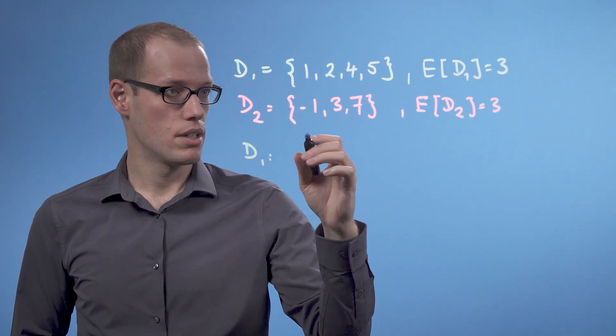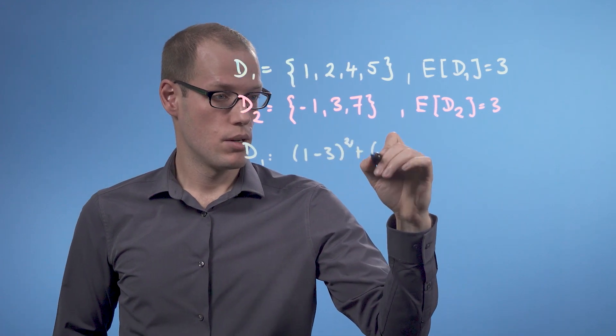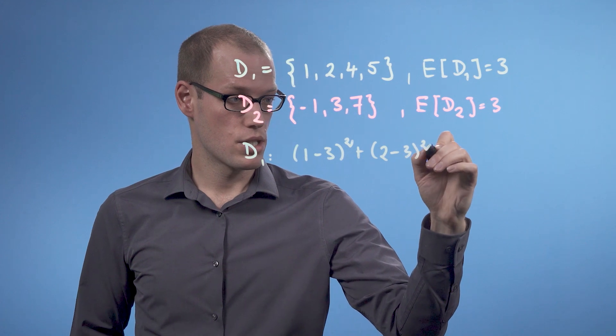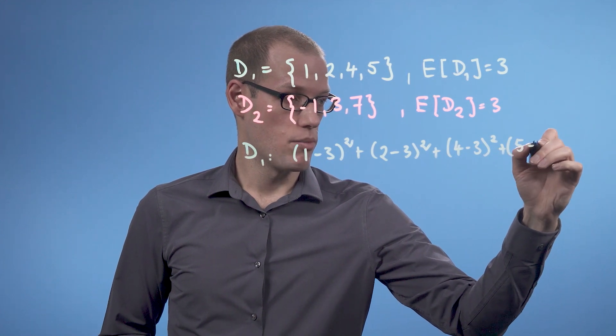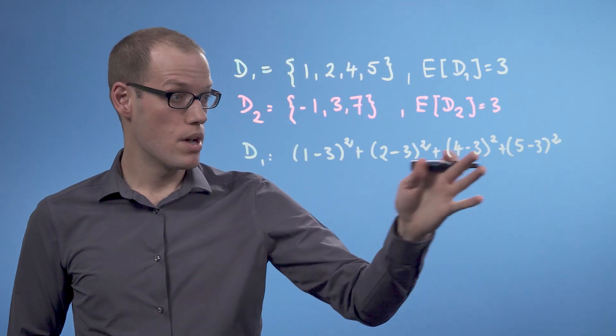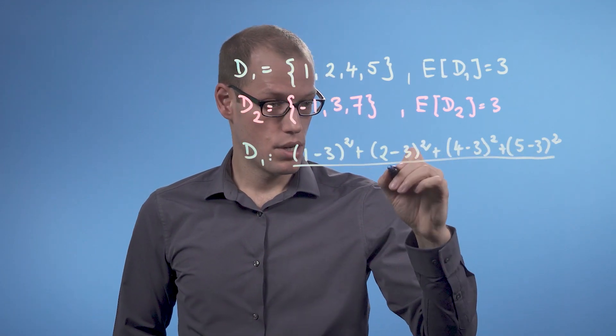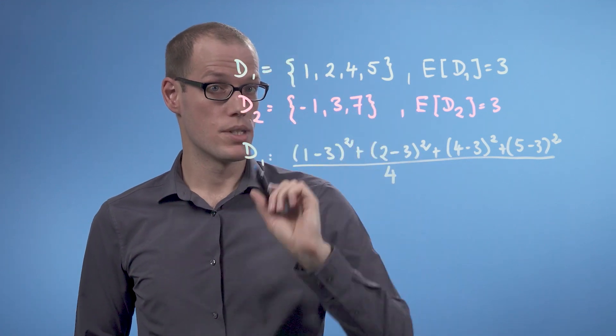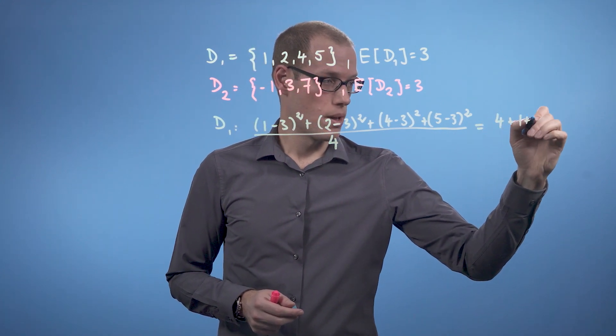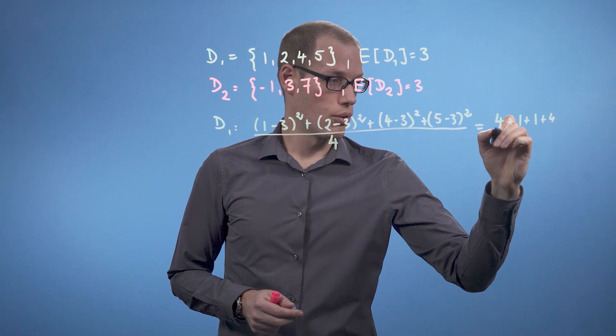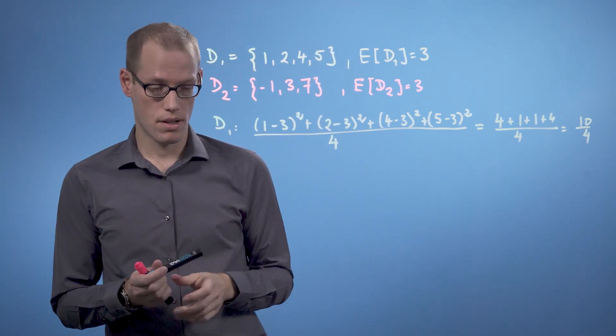So let us do this for D1 first. So we get 1 minus 3 squared plus 2 minus 3 squared plus 4 minus 3 squared plus 5 minus 3 squared. So these are the sum of the squared distances. And to get the average, we divide by 4, which is the number of data points in D1. So if we do the computation, we get 4 plus 1 plus 1 plus 4 divided by 4, which is 10 over 4.